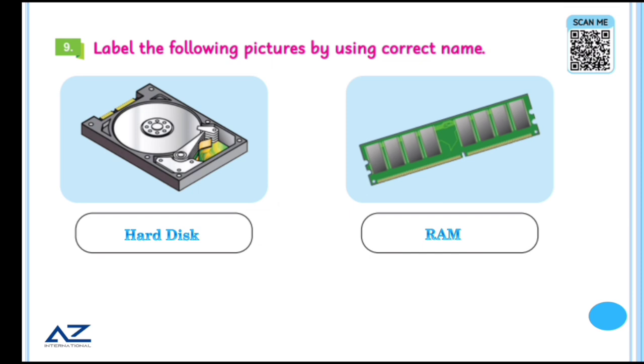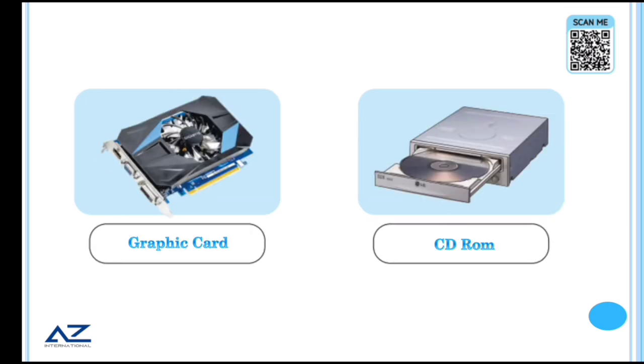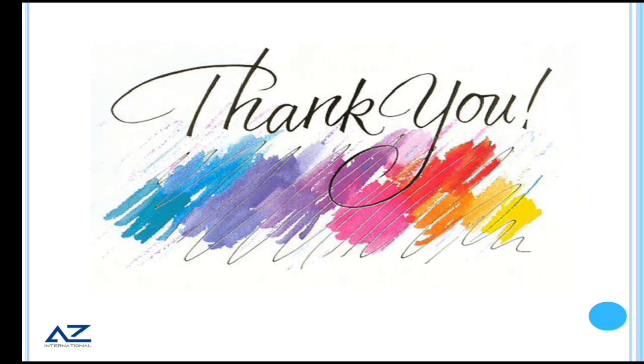Label the following pictures by using correct name. The first one is hard disk. Inside this you insert hard disk. Inside it there is a header which rotates and you can store data and retrieve it. RAM is a volatile memory inside which you store data. The next one is power supply. Inside it you have a fan inserted and electricity is provided to the rest of the parts of computer. When the system heats up, the fan starts running which is on its top. Then motherboard, the main component of the computer. Inside it all the circuits are inserted. The next is graphic card. Through graphic card you have different variety of colors on the screen. You can watch videos, all this is because of graphic card. Then CD-ROM.